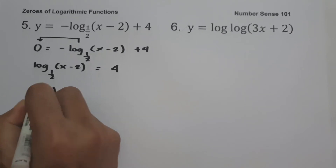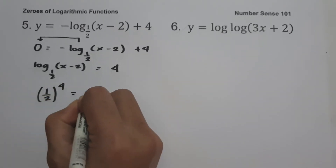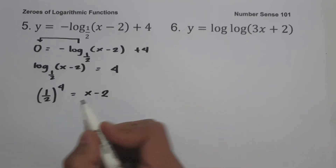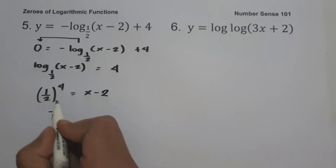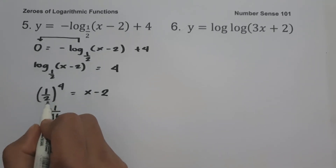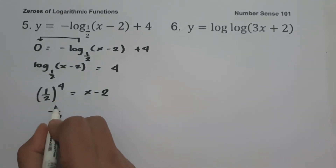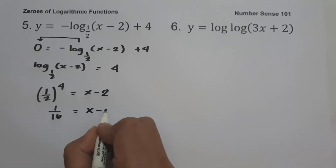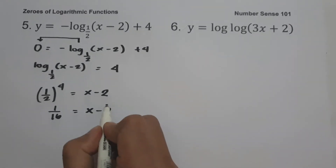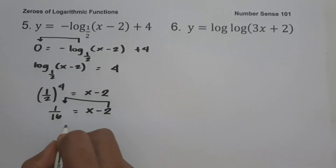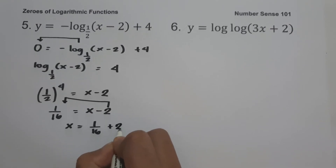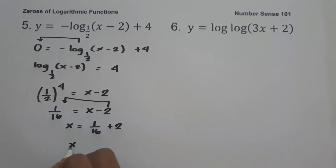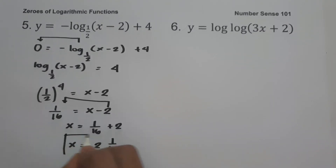Let us convert this into exponential form: (1/2) raised to 4 equals x minus 2. Since (1/2) raised to 4 is 1/16 — distributing the exponent to numerator and denominator — we have 1/16 equals x minus 2. Moving negative 2 to the other side: x equals 1/16 plus 2, which is 2 and 1/16. That is our answer.